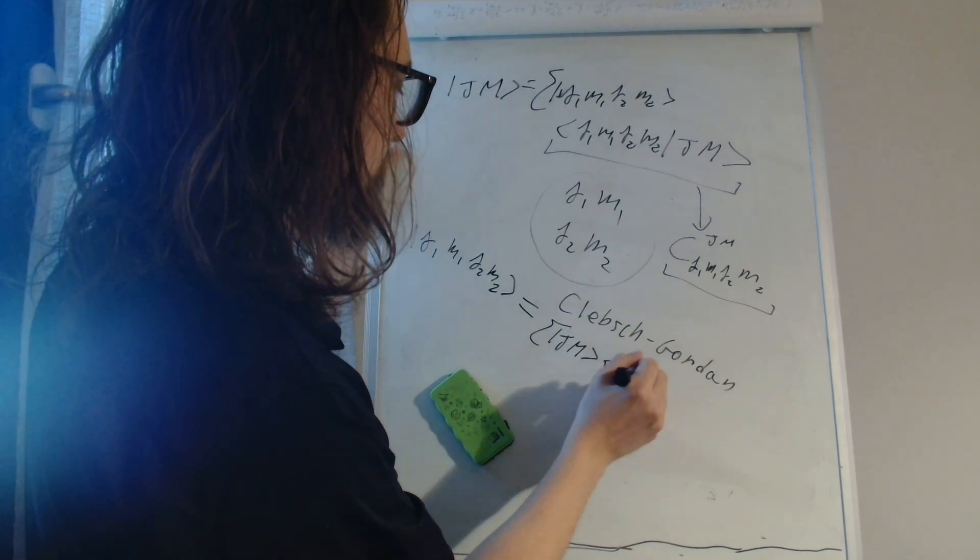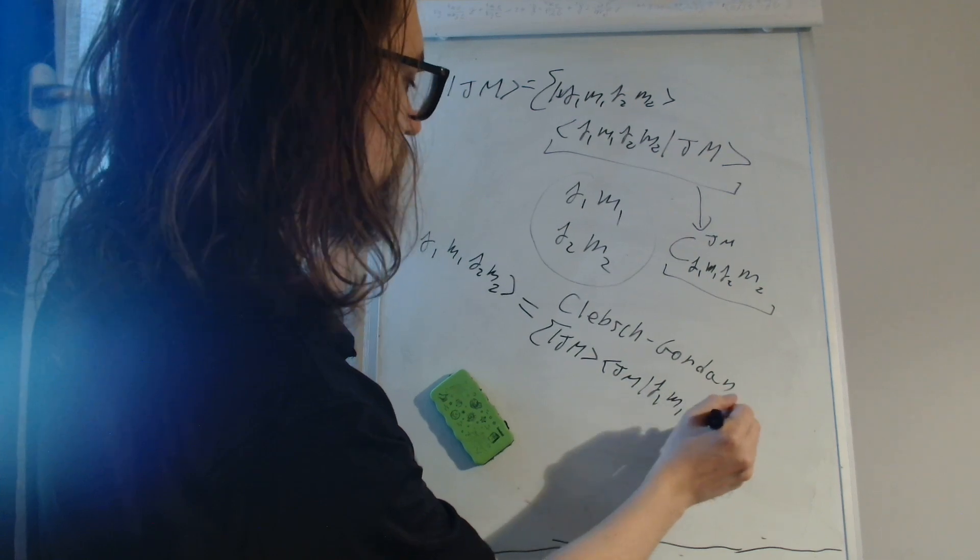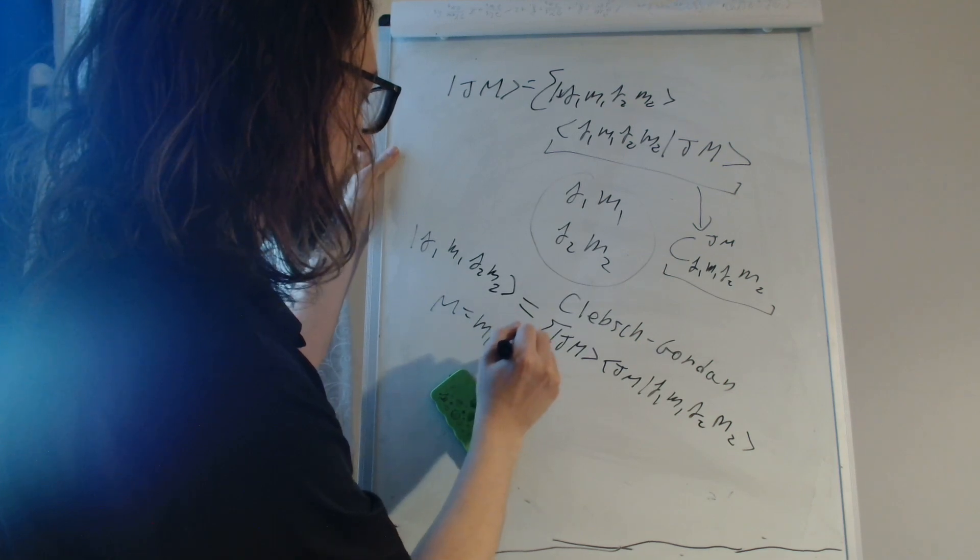We do the summation over J, M: J, M times J1, M1, J2, M2, where M will be M1 plus M2.